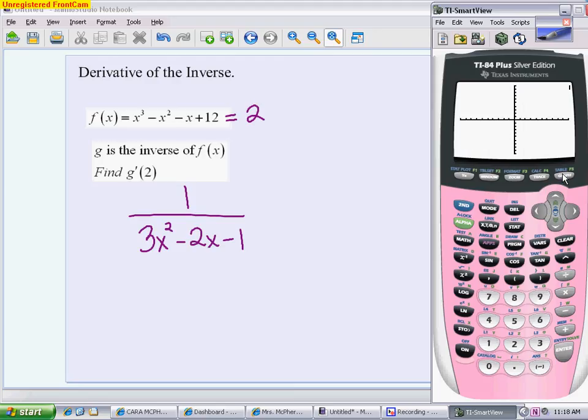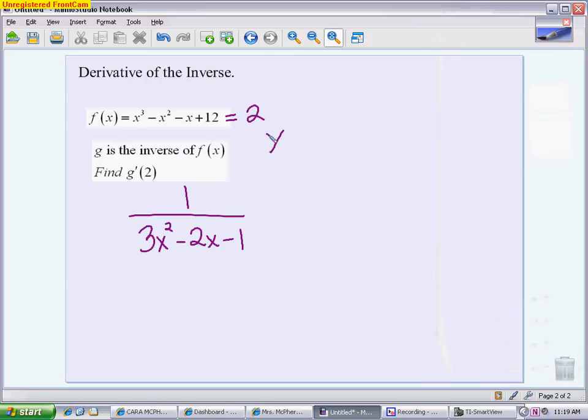When you graph it, you should find a definitive spot where they intersect. If you can't quite tell exactly where it is, you can use the calculate menu to find the intersection. So you do second and trace. We're going to choose intersection number 5. I can just go enter, enter, enter on this because I only have two curves, and it will show me exactly where they intersect. That means the x value that I'm using is actually negative 2.